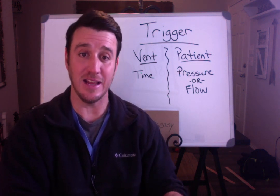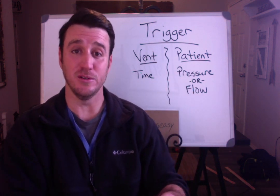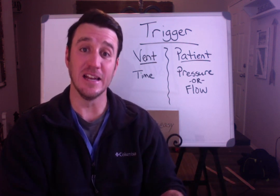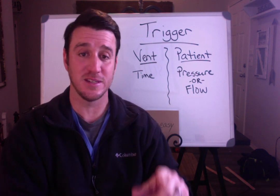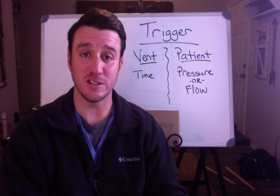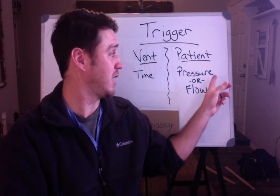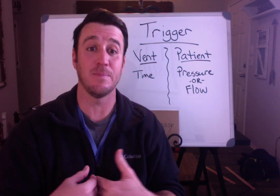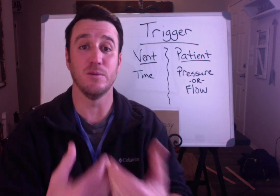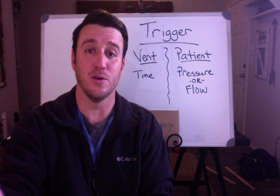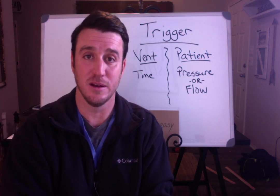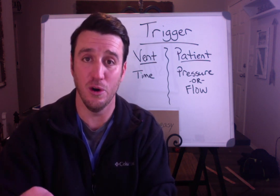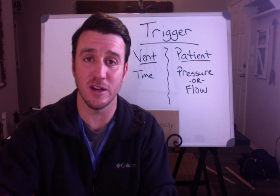Take this away: the ventilator has a job to do, and it is to deliver breaths anytime there's a set rate. It triggers those breaths based off of time. If the patient wants a breath, it will be delivered based off of a drop in pressure or the patient pulling flow out of the circuit, and the vent will allow the patient to take either a spontaneous, assisted, or synchronized breath. That's trigger — how does the ventilator know when to give a breath? When do we start inspiration?